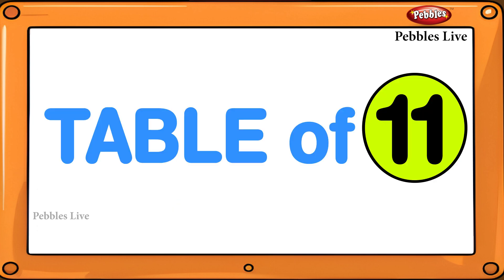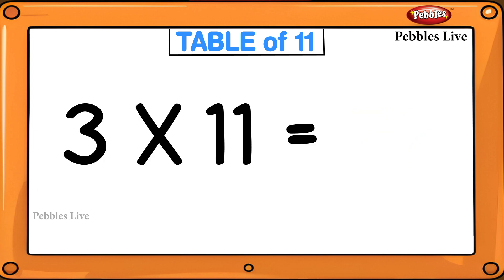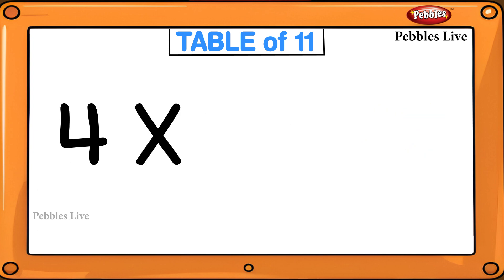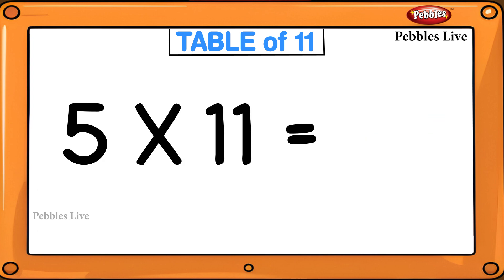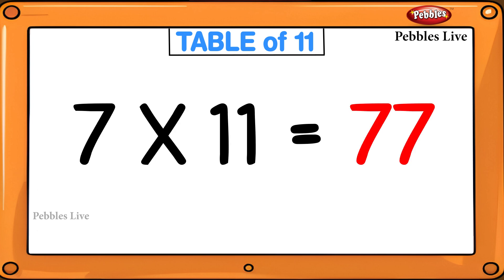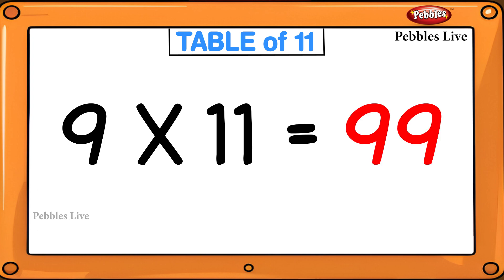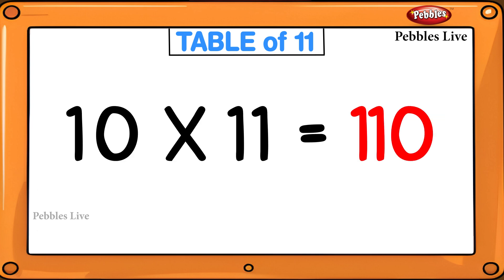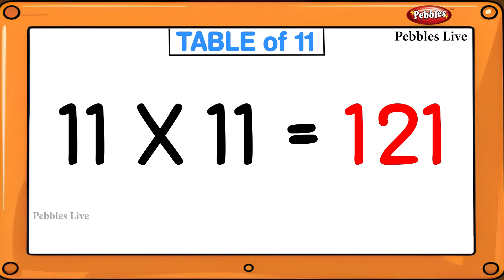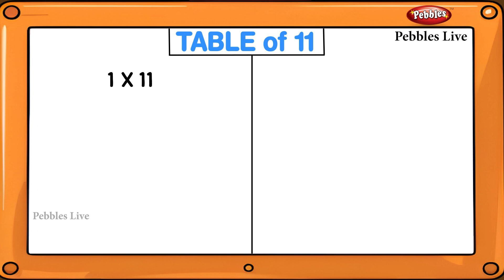Table of Eleven: 1 eleven is 11, 2 elevens are 22, 3 elevens are 33, 4 elevens are 44, 5 elevens are 55, 6 elevens are 66, 7 elevens are 77, 8 elevens are 88, 9 elevens are 99, 10 elevens are 110, 11 elevens are 121, 12 elevens are 132.